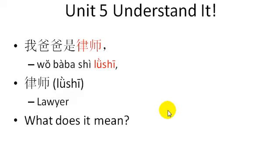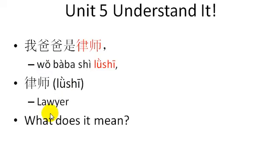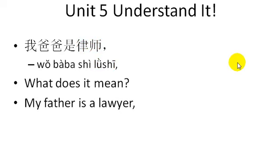Here comes the answer to the question: 我爸爸是律师. 律师 means lawyer — we'll talk about the pronunciation in a minute. 我爸爸是律师. The meaning of this sentence should be pretty clear to you: my father is a lawyer. The word order here shouldn't really bother you so much — it's pretty much the same as English.